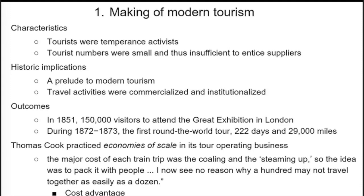The first lesson was all about introduction to hospitality economics and a recap of microeconomics. Some characteristics of the making of modern tourism: first, tourists were temperance activists, small in numbers and thus insufficient to sustain suppliers. However, due to historical implications as a prelude to modern tourism, travel activities were commercialized and institutionalized, leading to more of a tourism boom.